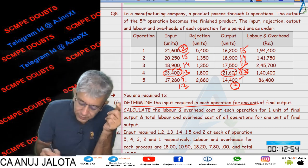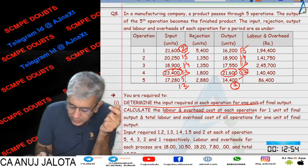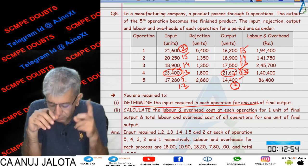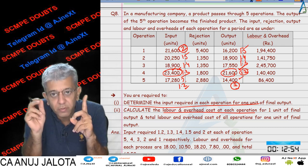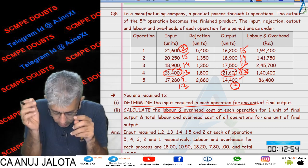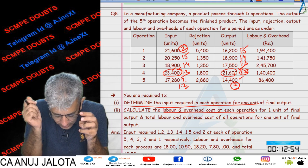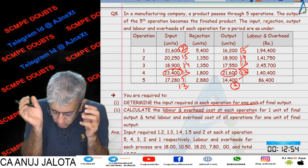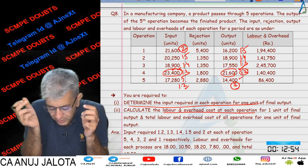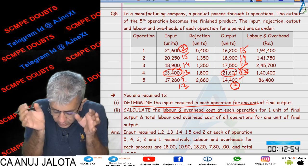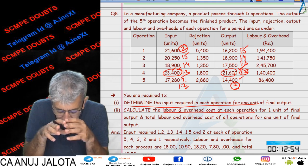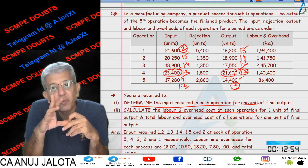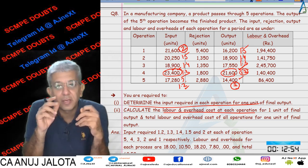Second part: calculate the labour and overhead cost at each operation for 1 unit of the final output, and the total overhead cost for all operations for 1 unit of the final output.